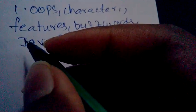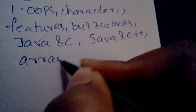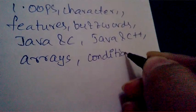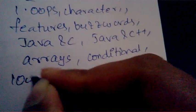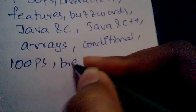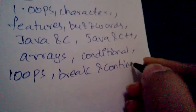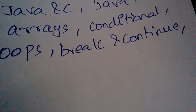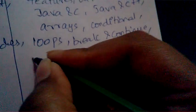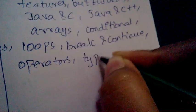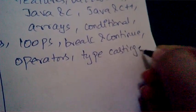Other important questions in Unit One are: explain the concept of arrays, what are conditional statements, what are loops (explain with example), what are break and continue statements, explain different types of operators, and what is type conversion and typecasting.